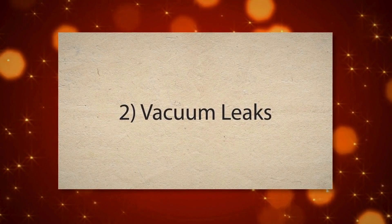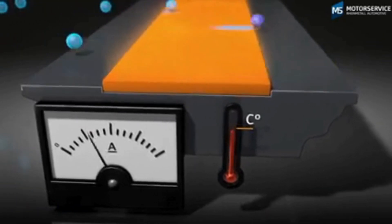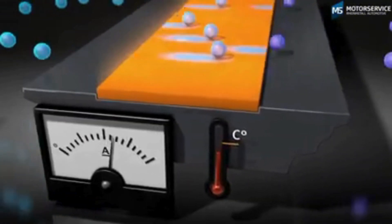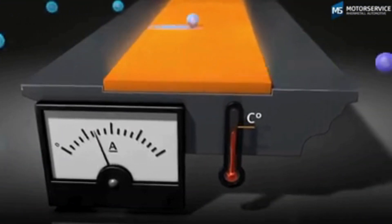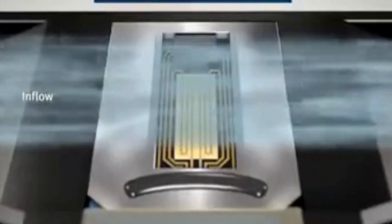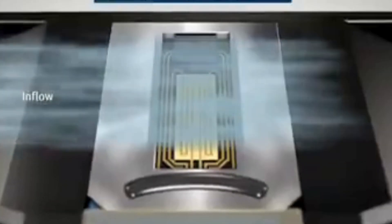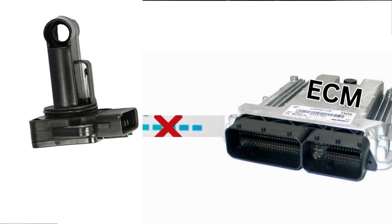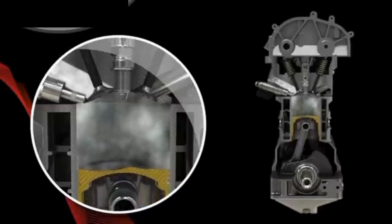Vacuum leaks: the intake system relies on a sealed path to accurately measure and manage airflow. Vacuum leaks let unmetered air enter the engine, causing the MAF sensor to report incorrect airflow values. This disrupts the air-fuel ratio, leading to the PO101 code.